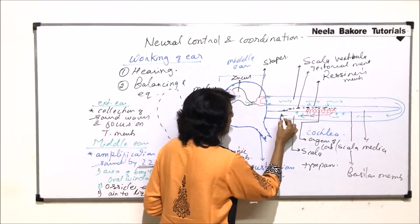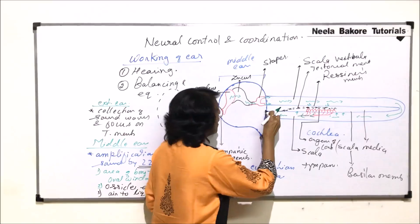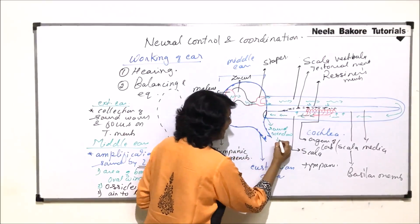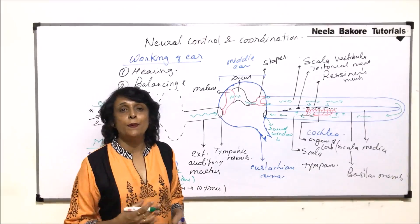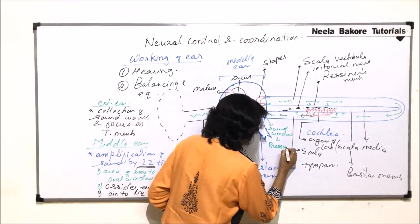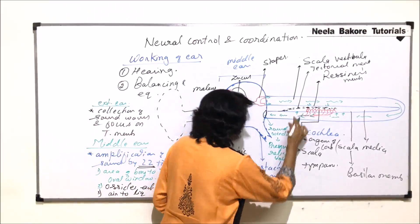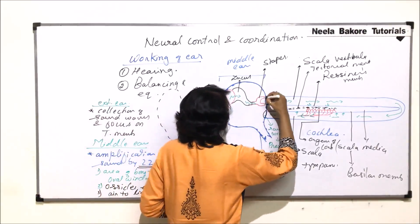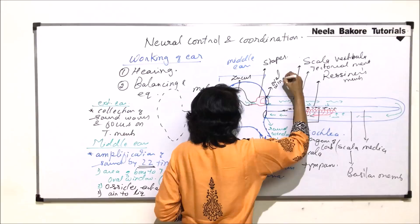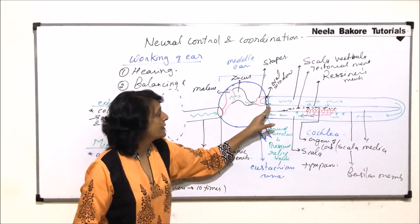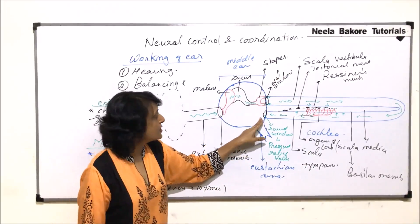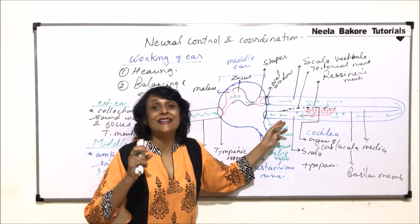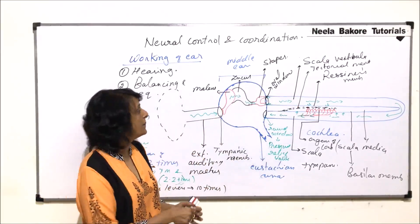The remaining vibrations escape through the round window. The round window acts as a vent or pressure relief wall, allowing sound waves trapped in the cochlear region to escape. Middle ear and cochlea are connected by two windows: the oval window where the stapes is attached, and the round window through which sound waves escape so they do not remain trapped.